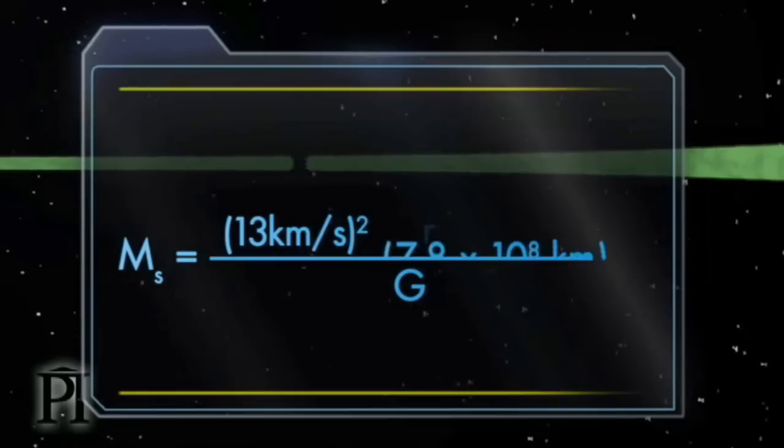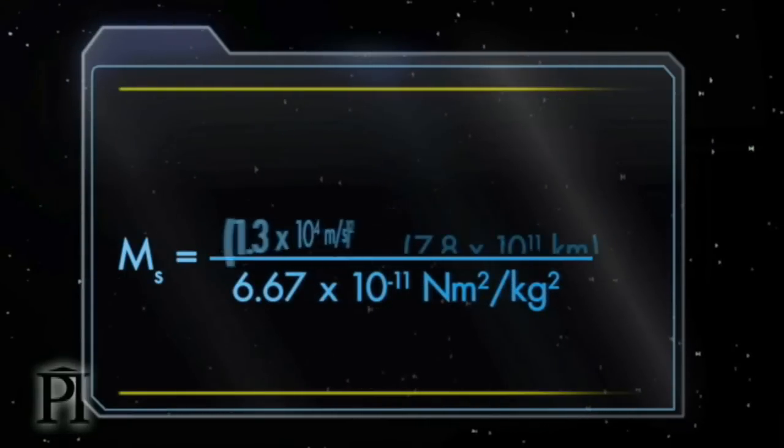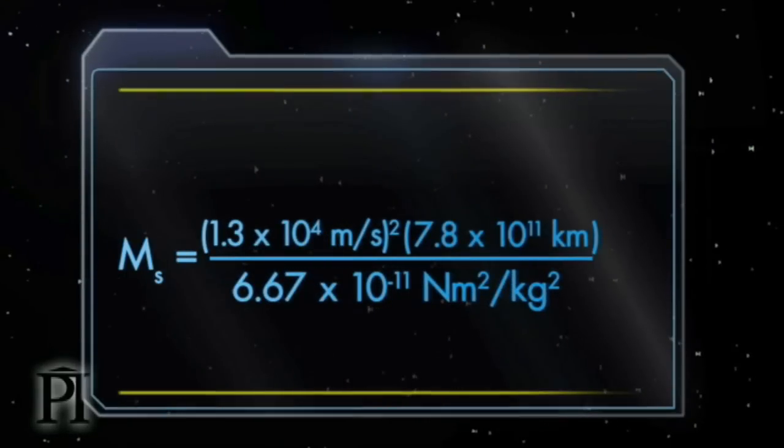When we substitute in the speed and radius of Jupiter's orbit, we can complete our calculation of the sun's mass.